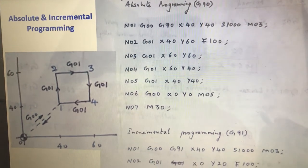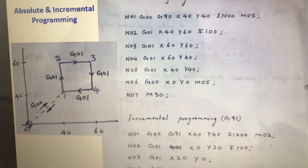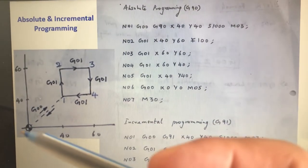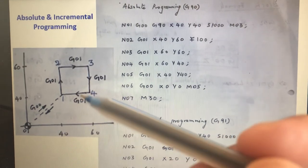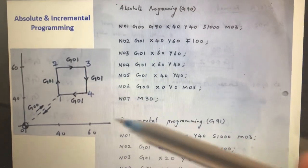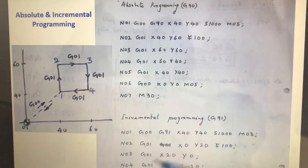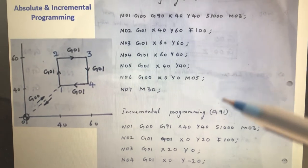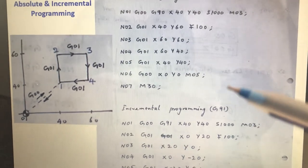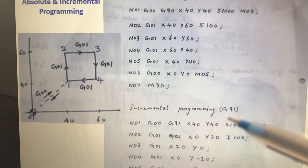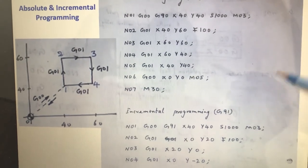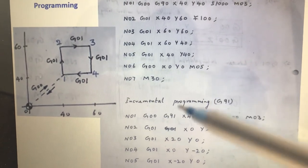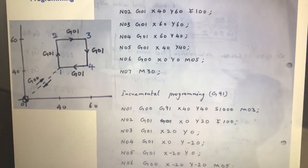Hope you are clear with this absolute programming and incremental programming. If anyone asks what is the difference, you should tell in absolute programming, the origin is fixed and values of X, Y is taken referent to that fixed origin. In incremental programming, the origin keeps moving. If you are taking the values of X, Y in point number 3, the point previous to point number 3 acts as origin. And from there, the values of X, Y is measured.